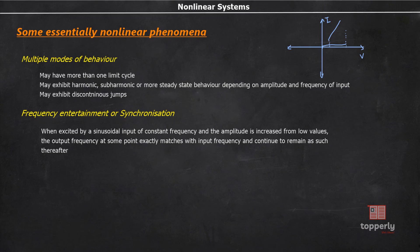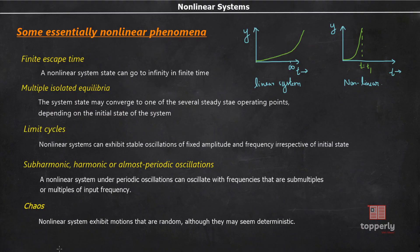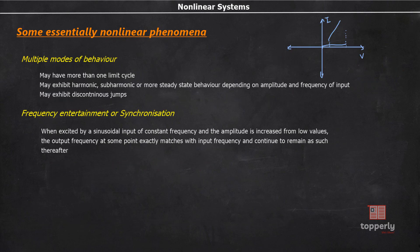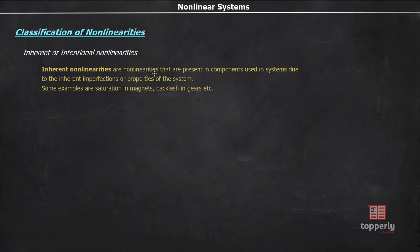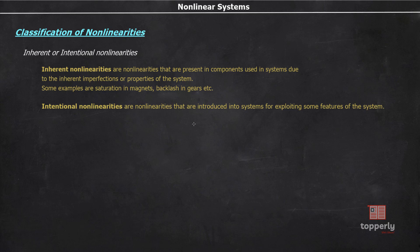In total, we have studied 7 phenomena which are present only in the case of non-linear systems. Now, moving to the next topic: classification of non-linearities. There are three main classifications. The first is inherent or intentional non-linearities. Inherent non-linearities are present in components due to the inherent imperfections or properties of the system — some examples are saturation in magnets, backlash in gears, etc. Intentional non-linearities are introduced into the system by the designer to exploit some features of the system; an example is different types of relays.